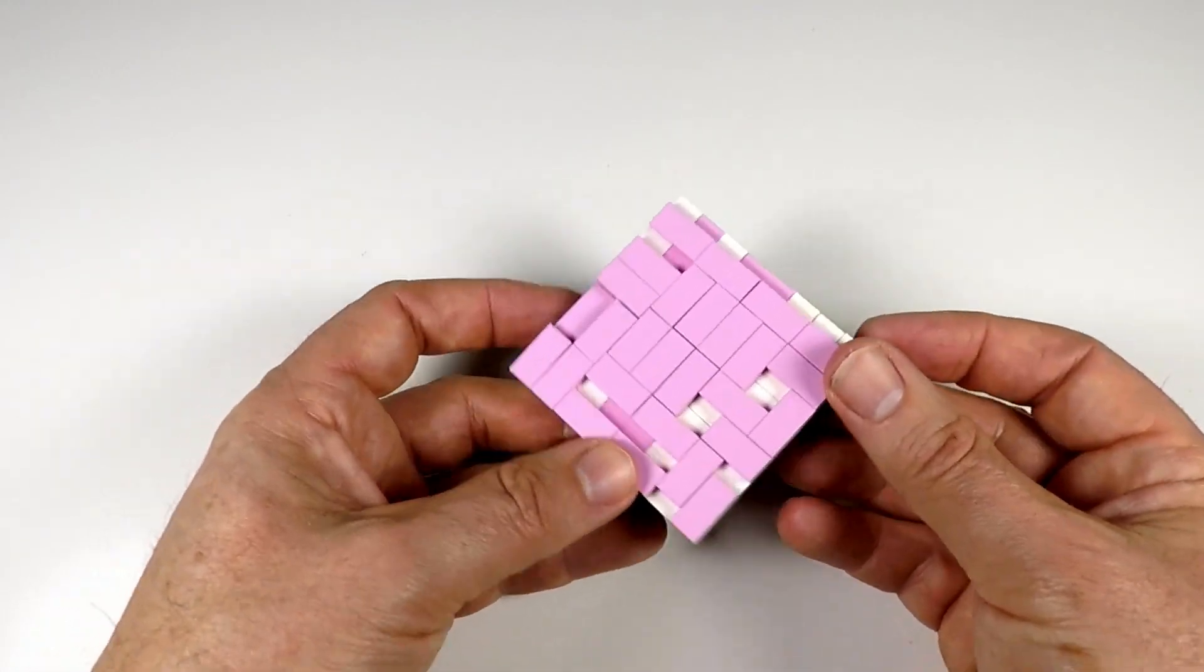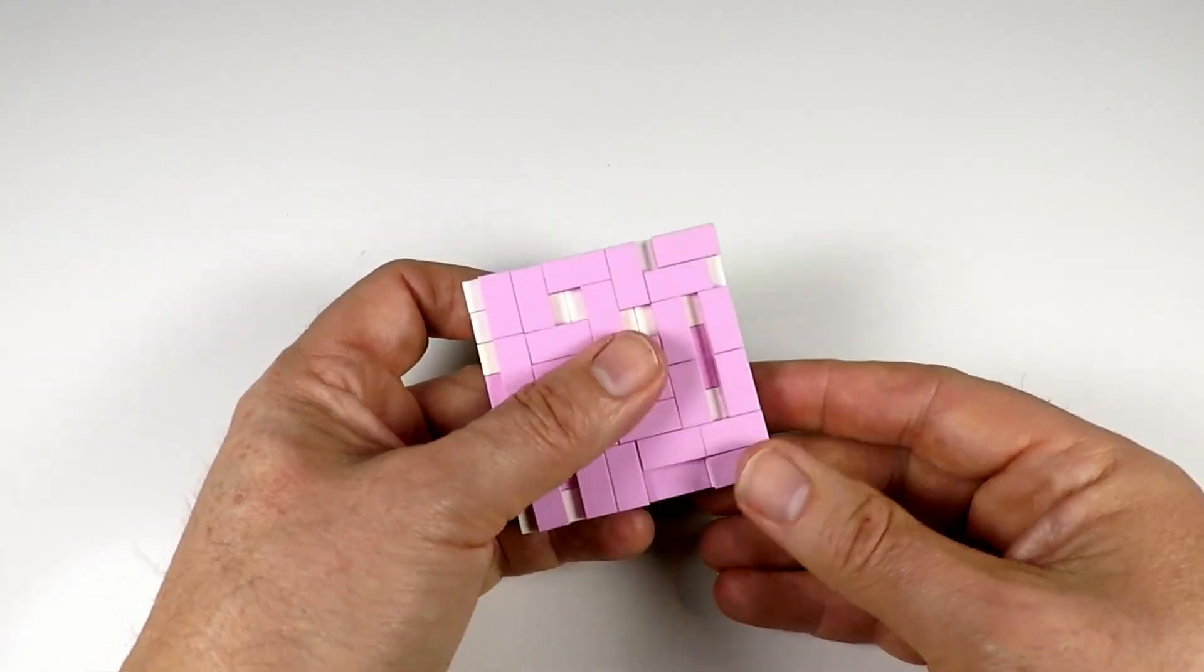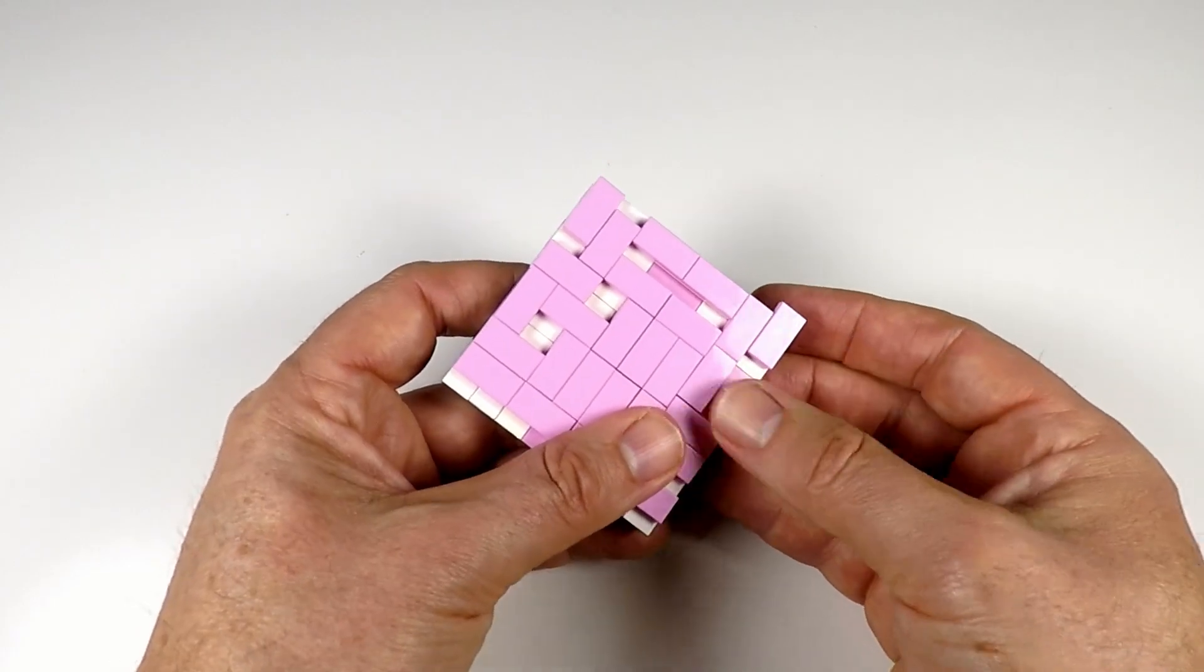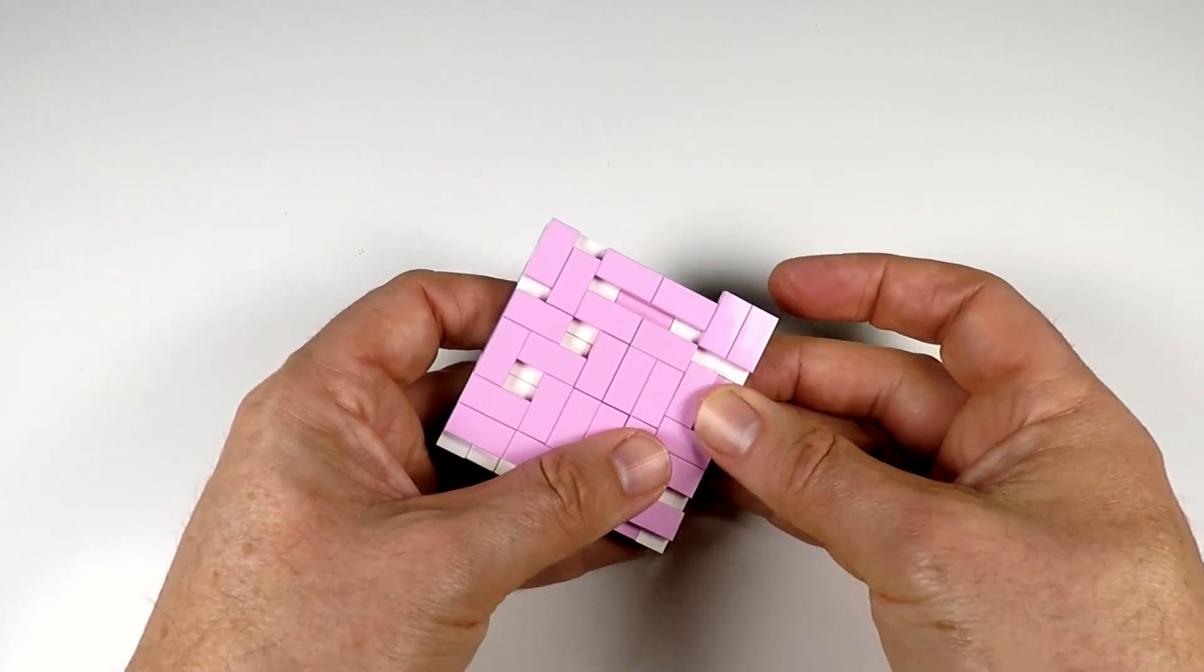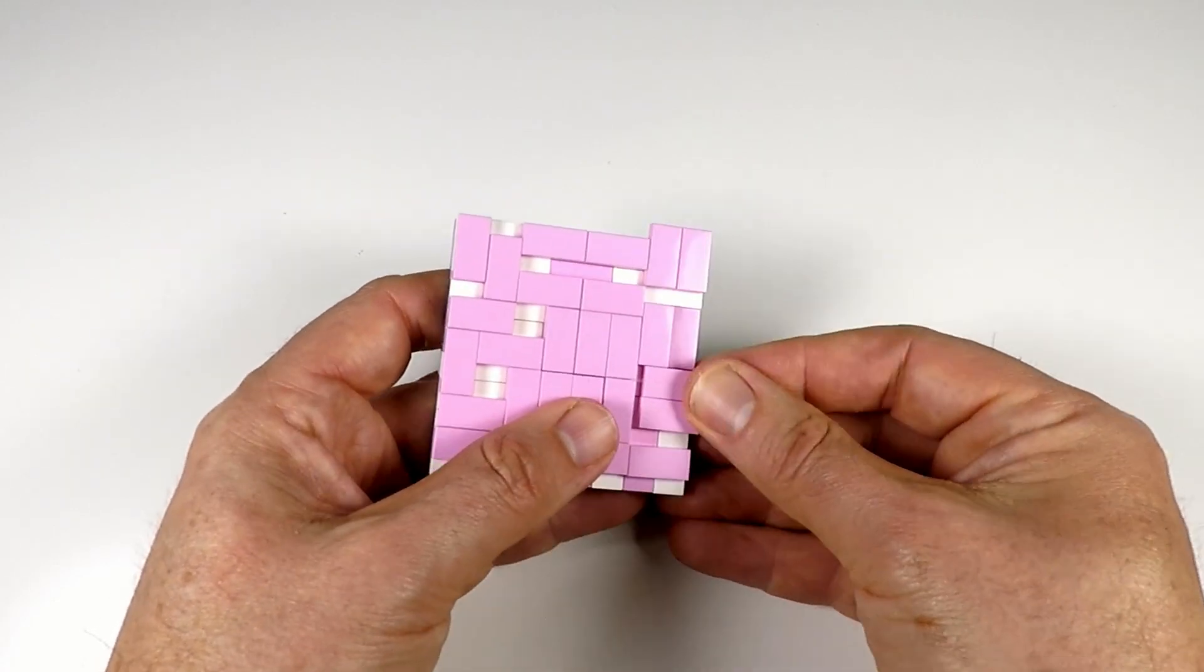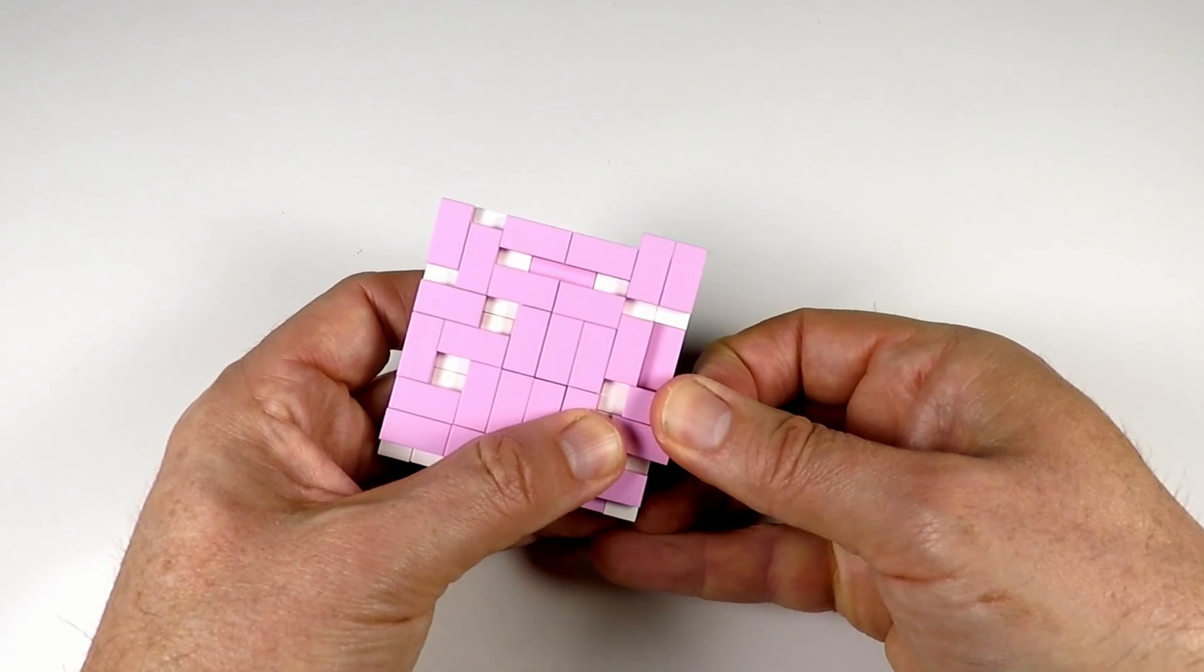So we're going to start sliding some of these pieces around. Maybe I'll slide this piece. That doesn't even slide, this piece. Oh hang on, that piece goes there. That piece goes over this way. Maybe I can slide this piece. Both of those pieces go like that.